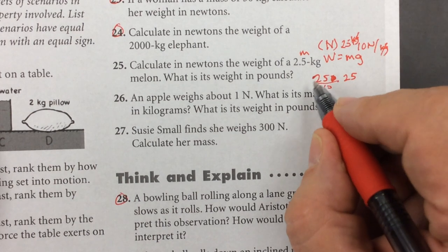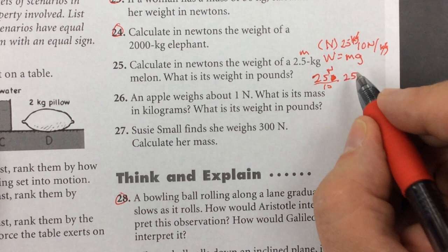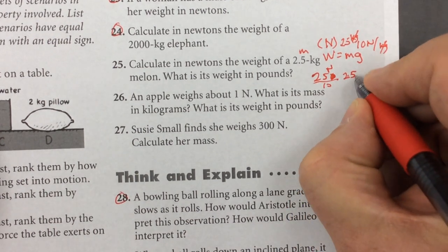So this is 25 newtons, 25 newtons, and if I want to get back to kilograms, I have to divide by 10, that gives me 2.5 kilograms.